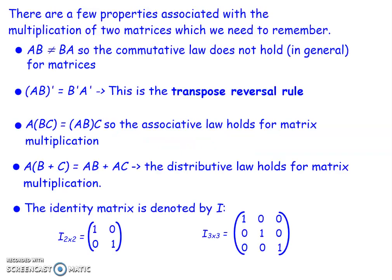The first big property to remember is that AB does not equal BA. If we multiply matrix A by B, we don't get the same result as B multiplied by A. So the commutative law doesn't hold in general for matrices — there are maybe one or two rare examples where it does, but practically we take it that it doesn't.